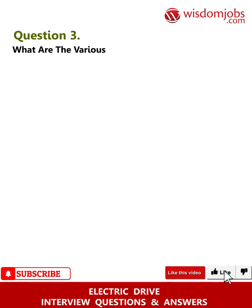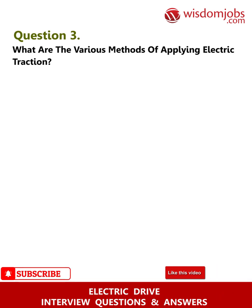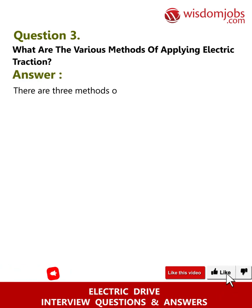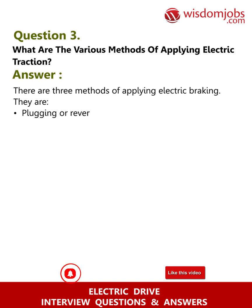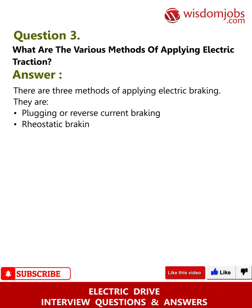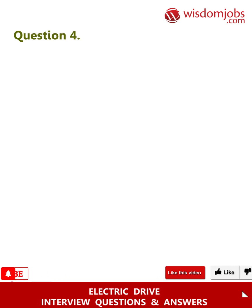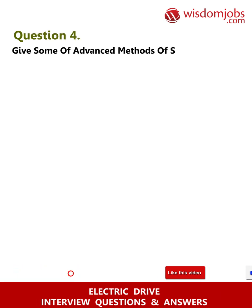Kinetic energy of the train should be stored during braking, which could be used subsequently during acceleration of the train. Question three: What are the various methods of applying electric braking? Answer: There are three methods — plugging or reverse current braking, rheostatic braking, and regenerative braking.